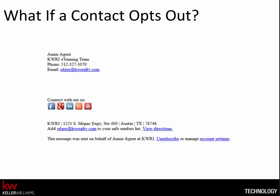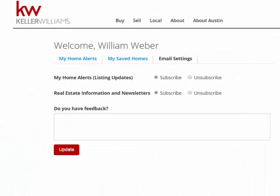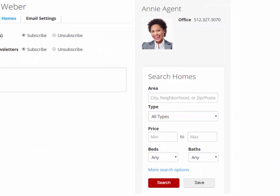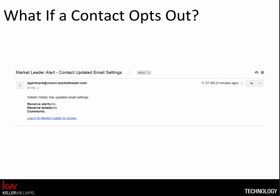If a client does decide to opt out of your campaigns, they will be taken to a page where they can update their home alerts, saved homes, and email settings. They also have a chance to search for homes. If they choose to unsubscribe, you will receive a notification email.